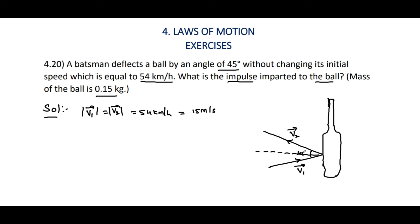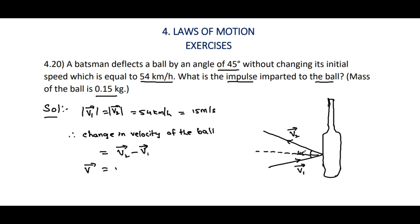To find out the impulse, we have: impulse equals change in momentum. So first of all we will find the change in velocity of the ball, which is equal to final velocity minus initial velocity. That is, delta v bar equals v2 bar minus v1 bar.